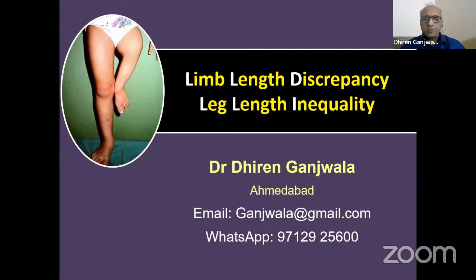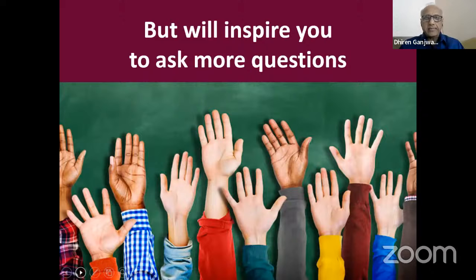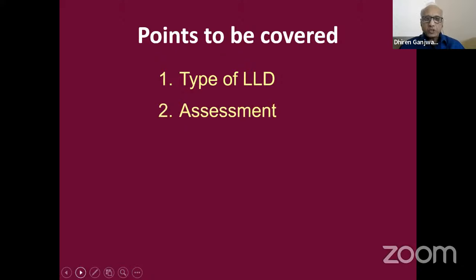Good evening and thank you very much for giving me this opportunity. This lecture is basically focused for postgraduate students. The aim of this talk is not to answer all your questions, but I will try to explain things in such a way that this lecture will inspire you to ask more questions. If you have any question, please ask the moderator and we will definitely discuss them. There are five important points we would like to cover: the types of limb length discrepancy, how to assess it, how the body compensates for it.